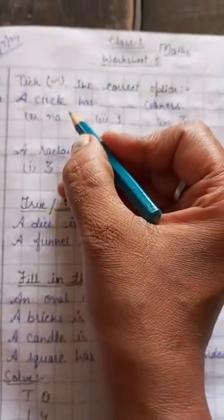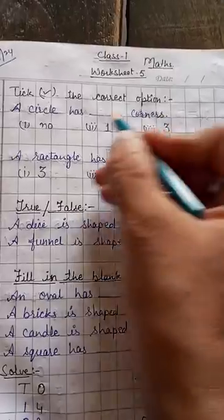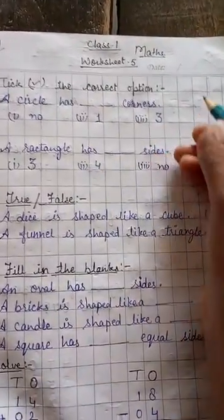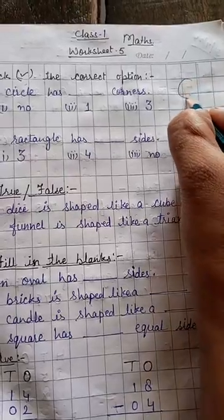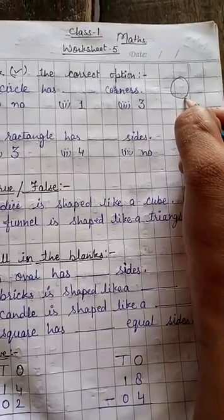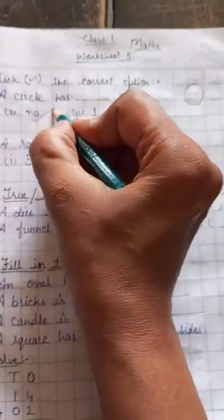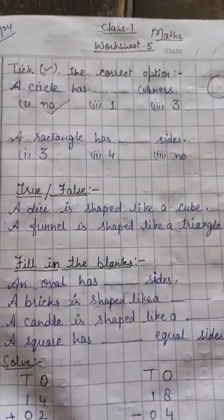First one is, a circle has dash corners. You know, circle has how many corners? There is a circle. Have you seen any side or corner? No. Circle has no corner.